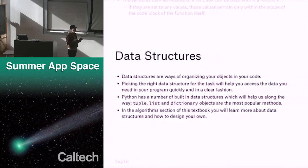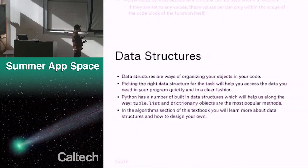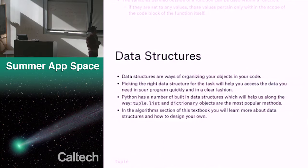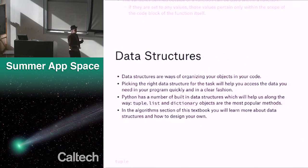Data structures are a general programming concept — they're a way of organizing your objects and your code. Picking the right structure for the task will help you access your data in a way that helps you program quickly and in a very clear fashion. Python has a number of data structures built into the language. Tuple, list, and dictionary objects are the most popular built-in data structures.